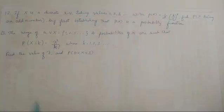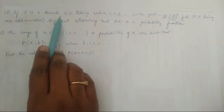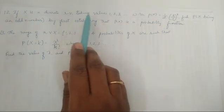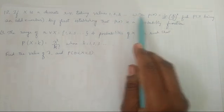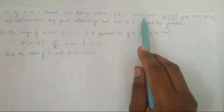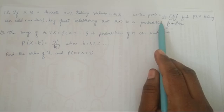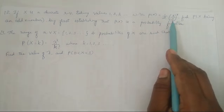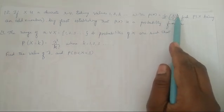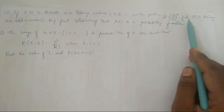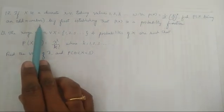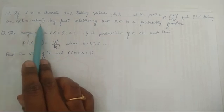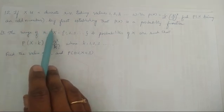The question is: if x is a discrete random variable taking the values 1, 2, 3 and so on, with p(x) equal to (1/2) times (2/3)^x, find the probability of x being an odd number — that is, x = 1, 3, 5, and so on.